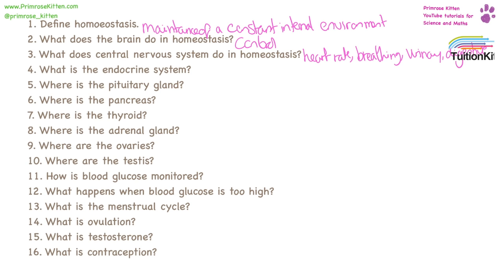What is the endocrine system? This is a collection of glands which release hormones, and hormones control a large number of things. They regulate metabolism, growth, development, tissue function, reproduction, sleep, and mood.